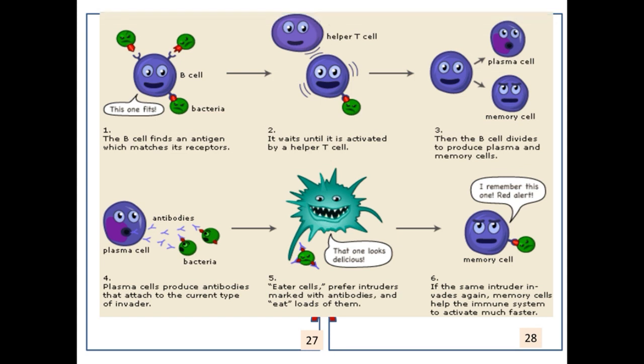Here is the chart showing the function of B cells. First is the B cell and there are antigens such as bacteria. The B cell finds an antigen which matches its receptor. Then it waits until it is activated by a helper T cell. Then the B cell divides to produce two kinds of cells: plasma cell and memory cell. Plasma cells produce antibodies which attack the antigens or bacteria. Memory cells retain the memory so when the same intruder invades again, memory cells help the immune system to activate much faster.